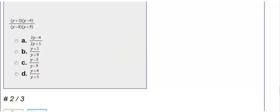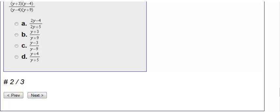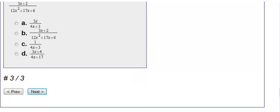And lastly, number 3 here. We have 3x plus 2 over 12x squared plus 17x plus 6. So I look at the top. On the top I cannot do anything there, so I'm going to leave that. On the bottom I have 12x squared plus 17x plus 6. I can't pull that out, but I can factor it.